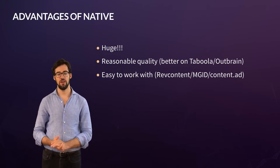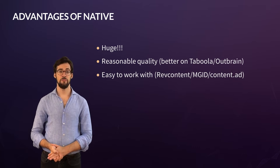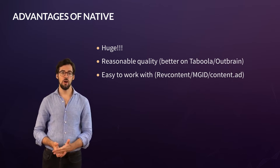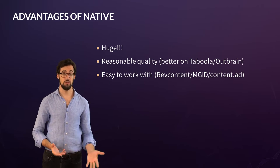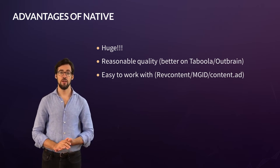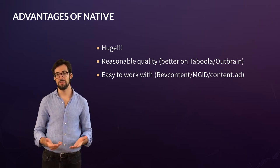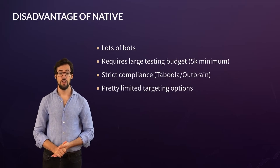Especially Taboola and Outbrain — the more premium, white-hat networks — they have really solid quality and some really great publishers such as MSN and CNN. It can also be pretty easy to work with for Rev Content and Content.ad — some more native ad networks that are affiliate friendly. Rev Content is owned by Click Dealer, an affiliate network, so they know who you are, they know what you're doing, and they're happy to work with you. You can talk openly about what campaigns you want to run, and in many cases you can run completely non-cloaked campaigns, with pretty lenient compliance.